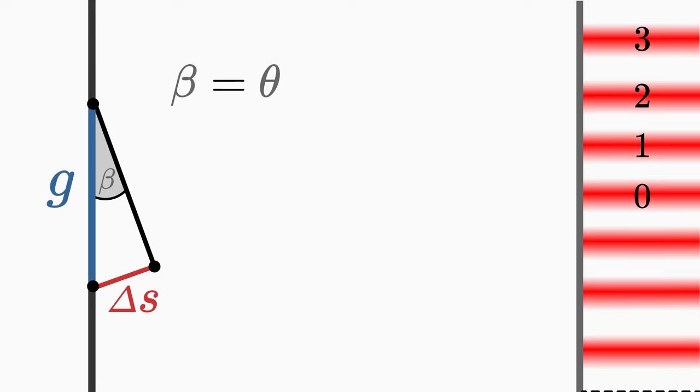With the help of the second approximation you know that the angle beta corresponds to the angle theta and you can replace it.